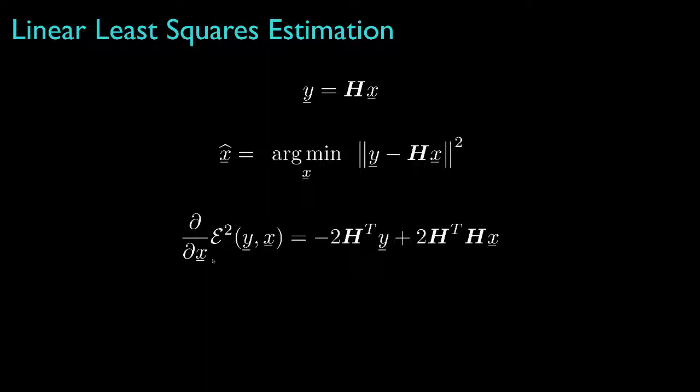When we differentiate this with respect to each element of the parameter vector, we'll get negative 2 times the transpose of the observation matrix times the observation, plus 2 times the transpose of the observation matrix times the observation matrix times our guess for the parameter. Now if we set this equal to 0, this specifies that the linear least squares estimate is the solution to this system of equations, which when H is full rank can be written as H transpose H inverse times H transpose times the observation. And that would be our linear least squares estimate of the parameter vector x from an observation y.